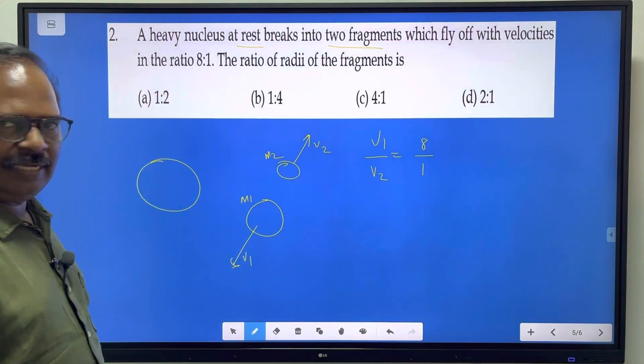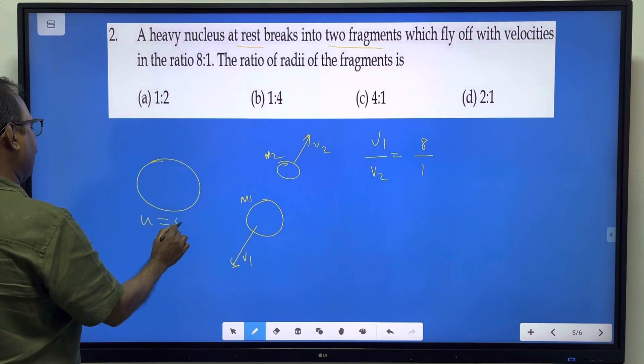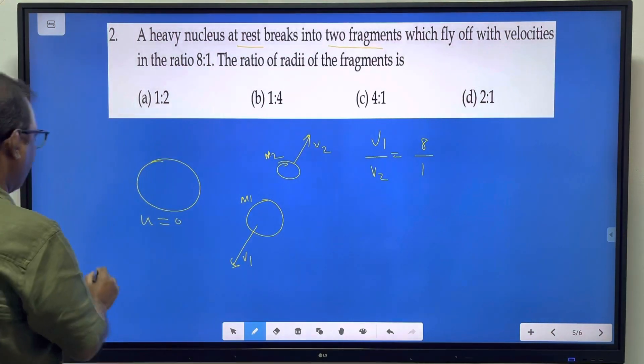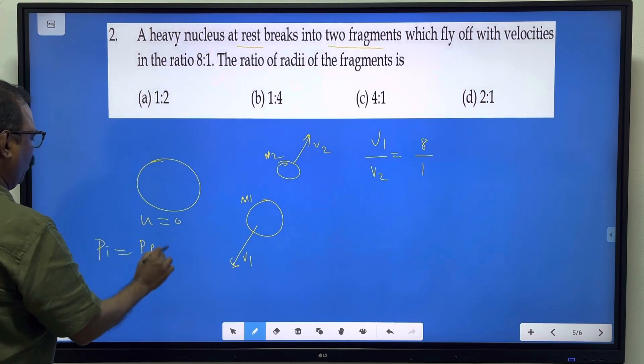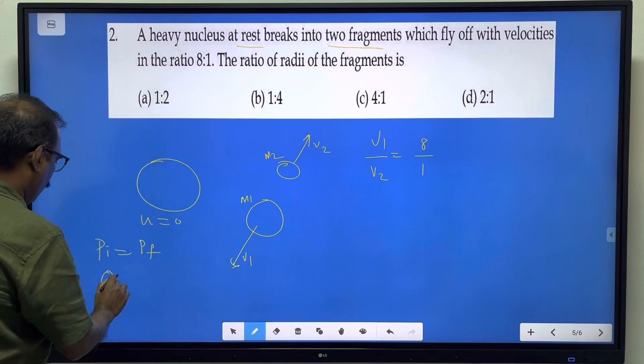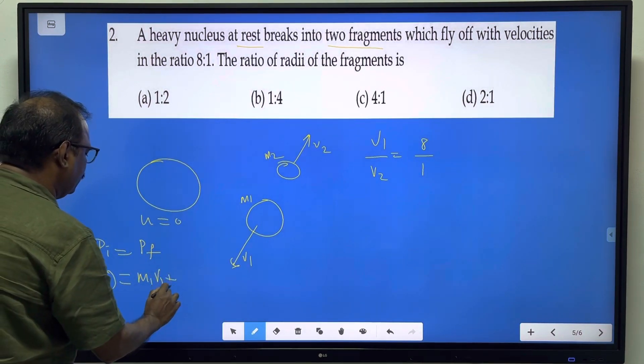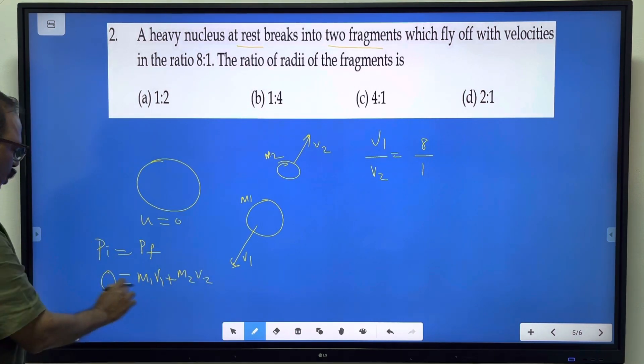Initially the nucleus is at rest, so initial velocity is zero. Using the law of conservation of momentum: initial momentum equals final momentum. Initial momentum is zero since there's no initial velocity. Final momentum is the sum of both fragments' momenta, which must total zero.